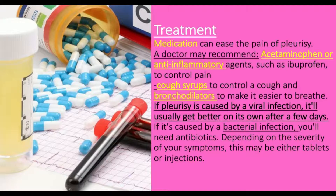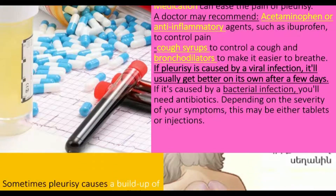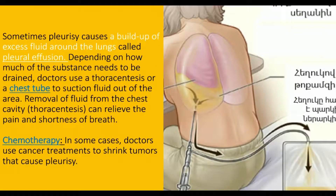If pleurisy is caused by a bacterial infection, you will need antibiotics. Depending on the severity of symptoms, this may be either tablets or injections. Sometimes pleurisy causes a buildup of excess fluid around the lungs called pleural effusion. Depending on how much fluid needs to be drained, doctors use a needle and syringe or a chest tube to suction fluid out of the area, which can relieve pain and shortness of breath.